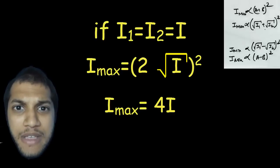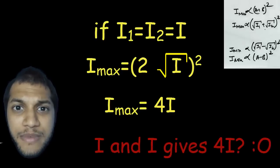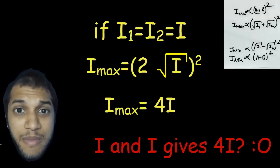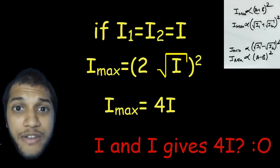Why is that? Why not 2 times I? Why is it 4 times I? Is this some sort of energy creation? Because intensity talks about energy and we know that energy has to be conserved. So why is it that we are getting 4 times?